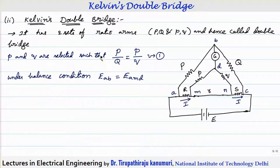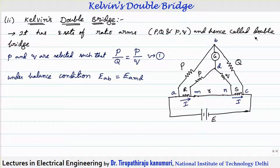The Kelvin double bridge — the name itself indicates 'double bridge' — in order to replicate or remove the effect of lead resistance, one extra ratio arm (small p and small q) is connected in addition to the existing ratio arm capital P and capital Q. So there are two sets of arms, which is why it is called Kelvin's double bridge. The ratio P/Q is set equal to p/q. This is equation number 1.